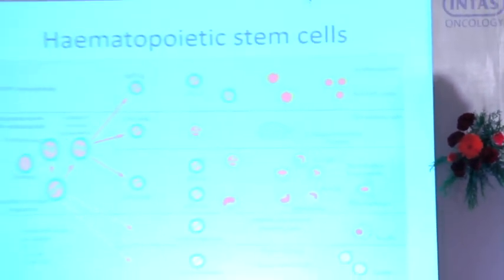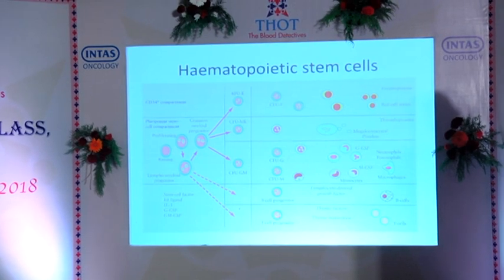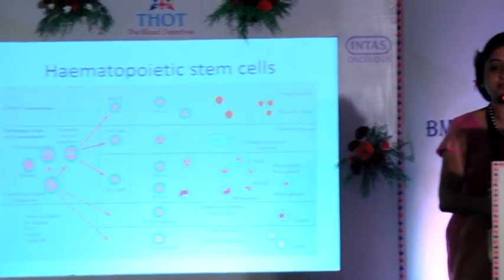I want to give you an introduction to aplastic anemia in children — how it's different from adults — a little bit on acquired aplastic anemia, principles of management especially transplant management, and the inherited marrow failure syndromes. The hematopoietic stem cells give rise to red cells, platelets, and white cells. An inherited marrow failure syndrome can affect the hematopoietic stem cell itself, or it can only affect red cell production, platelet production, or white cell production.